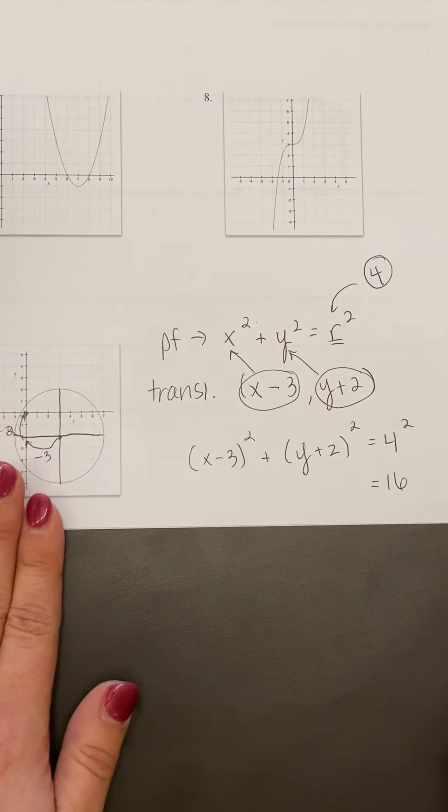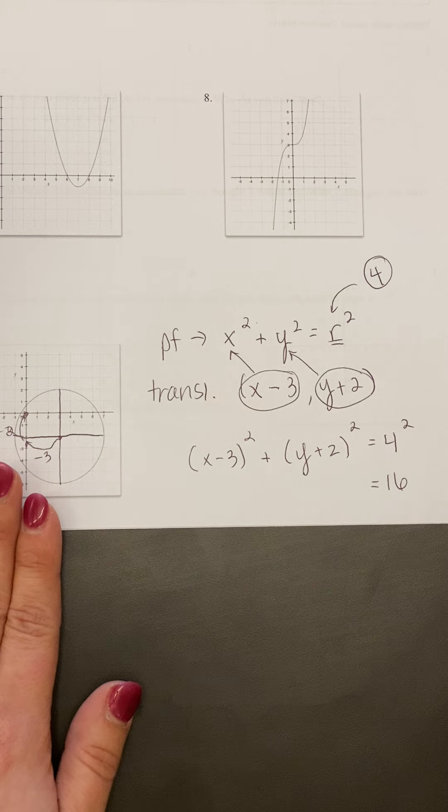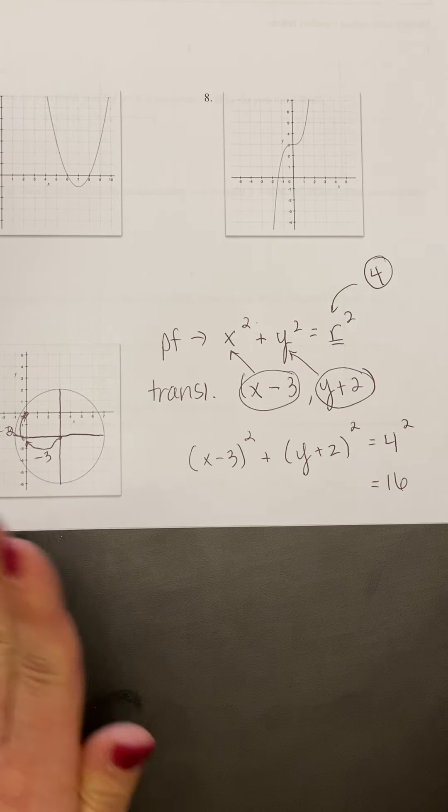If I feel more comfortable writing that as x equals, or as 16, 4 squared is 16, that's okay.